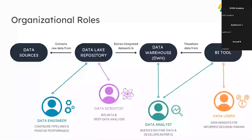What drives the analytical power behind this architectural approach? Two key things: first, the design principles — the three-data-lake structure for raw, curated, and staging data; common dimensions and dimensional data modeling; and reusability, both in pipeline reuse and in reusing data warehouse data across multiple users and analysts. Second, on the technology side: Hadoop's HDFS, a highly fault-tolerant distributed file system, and Spark, which provides computational power for transformations over large distributed data sets. Both are open source.